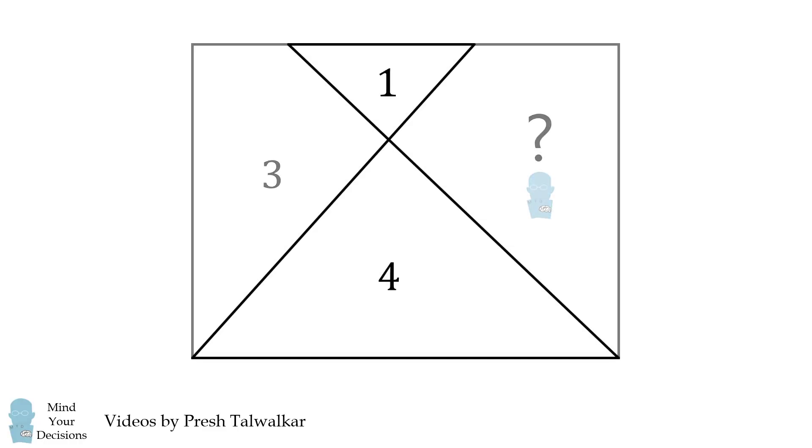We'll get started by focusing on these two triangles. These two angles are equal to each other because they're vertical angles. Next, these two angles are equal to each other because they're alternate interior angles. This is because opposite sides of a rectangle are parallel to each other.